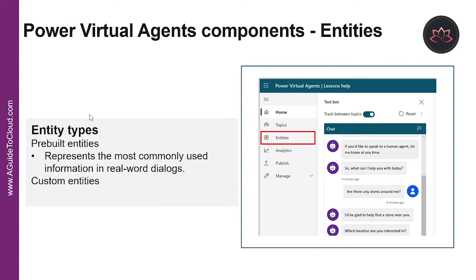So, what are entities? Out of the box, Power Virtual Agents comes with a set of pre-built entities which represent the most commonly used information in real-world dialogues, such as age, color, number, and name. With the knowledge granted by entities, a chat bot can smartly recognize the relevant information from a user input and save it for later use.